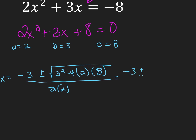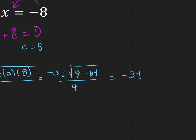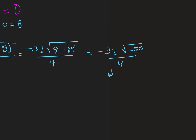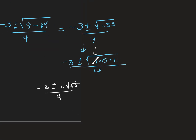So now we simplify: negative 3 plus or minus the square root of — 3 squared is 9, minus 4 times 2 is 8 times 2 is 64, all over 2 times 2 is 4. Keep simplifying: negative 3 plus or minus the square root of 9 minus 64 is negative 55, over 4. Breaking up 55: it's negative 1 times 5 times 11. There are no perfect squares hidden in there, but I do see a negative 1 underneath, so the square root of negative 1 is i. So x equals negative 3 plus or minus i square root of 55 over 4. Written in a plus bi form: negative 3 over 4 plus or minus i root 55 over 4.